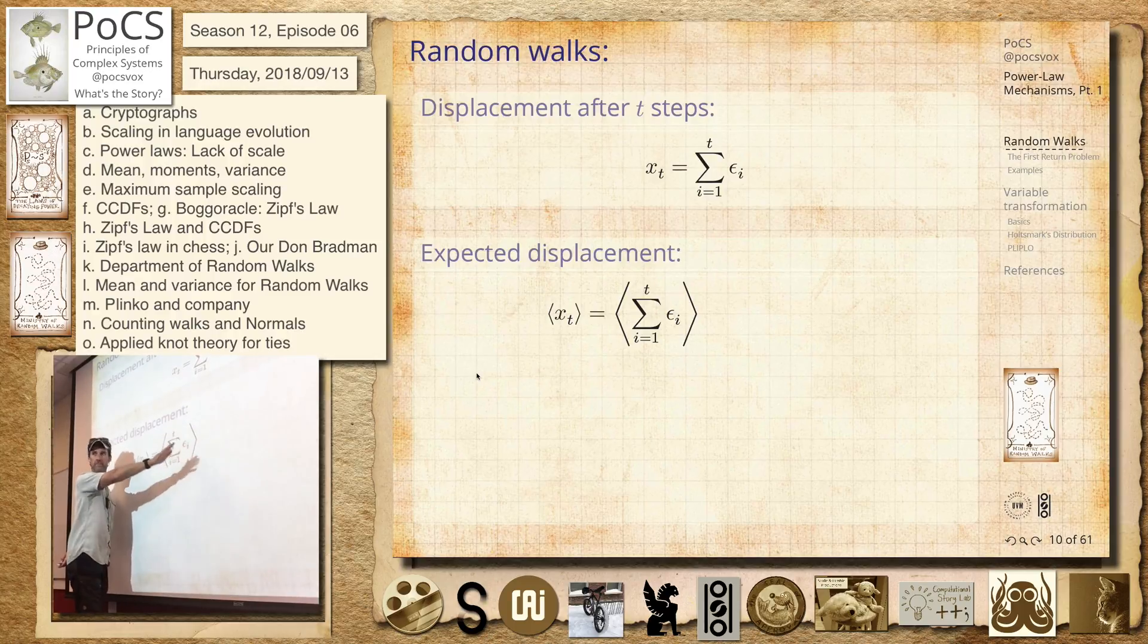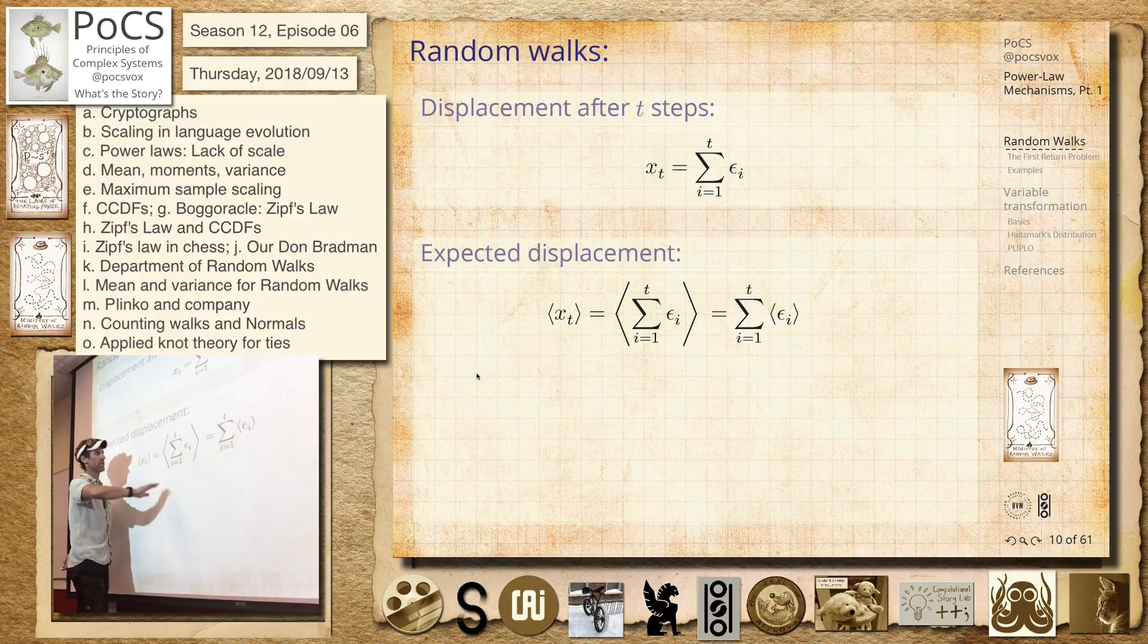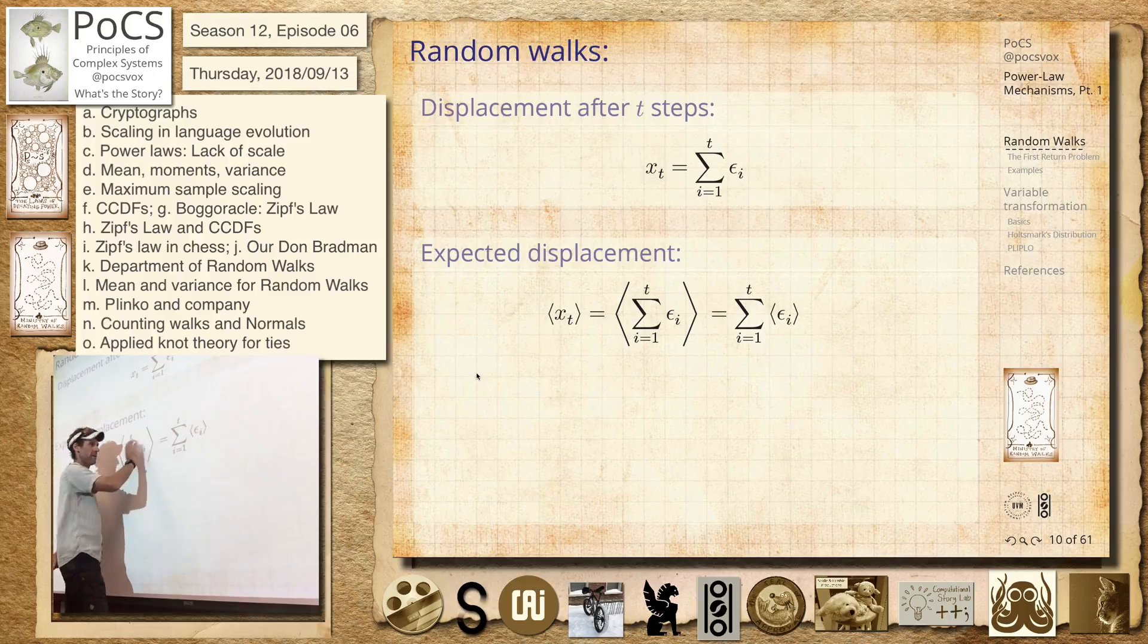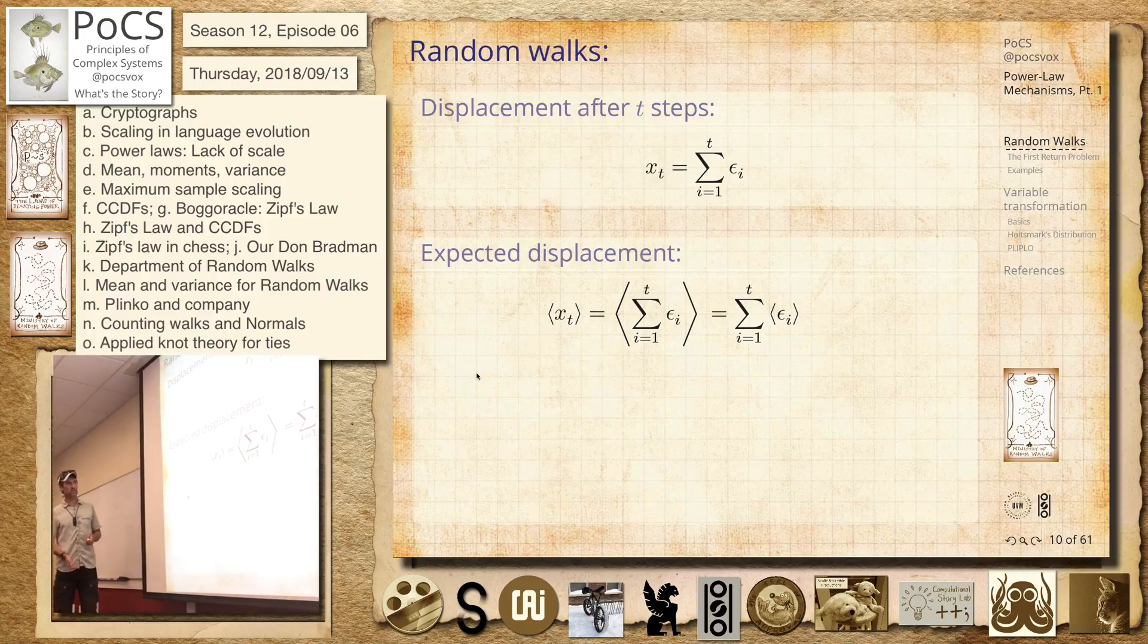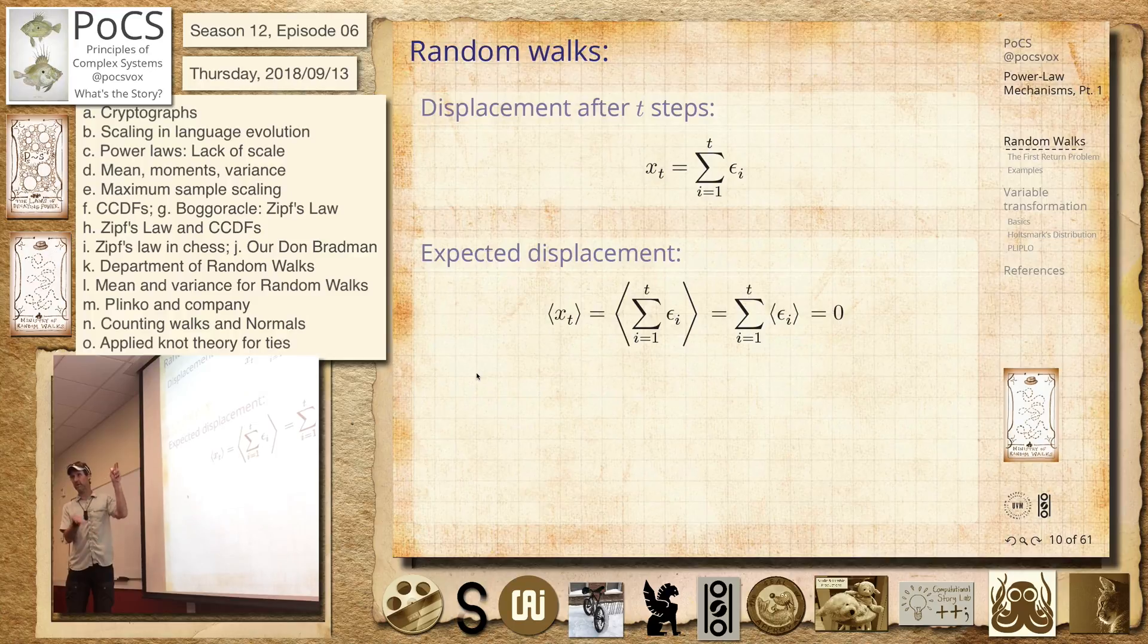They're random, independent random variables. So we don't have to worry about it. You can have them connected a little bit, you can do all sorts of things, but they're going to be independent. So it's just the sum of their averages. And their average displacement of each of these things is just 0. Half a chance it goes this way, half a chance it goes this way. On average, weirdly, they go nowhere.